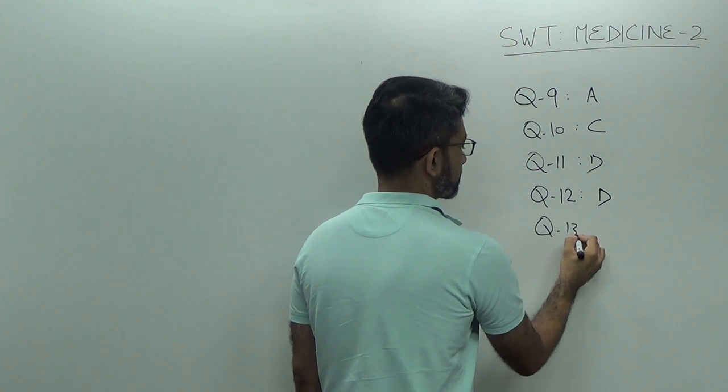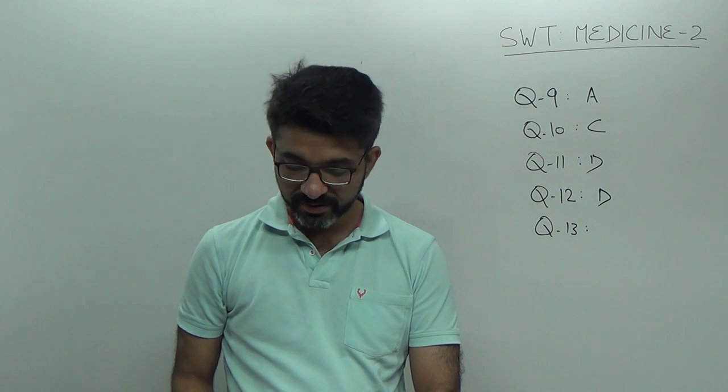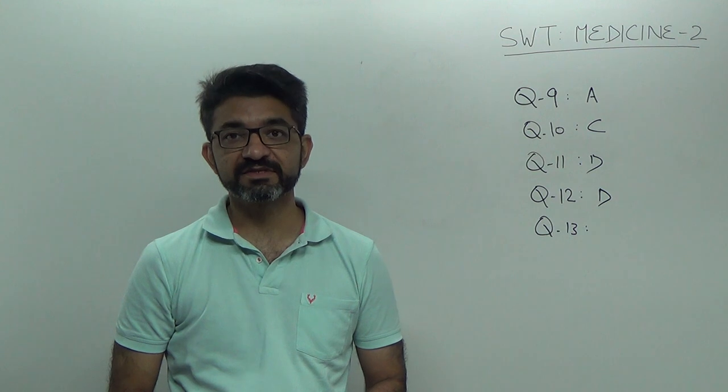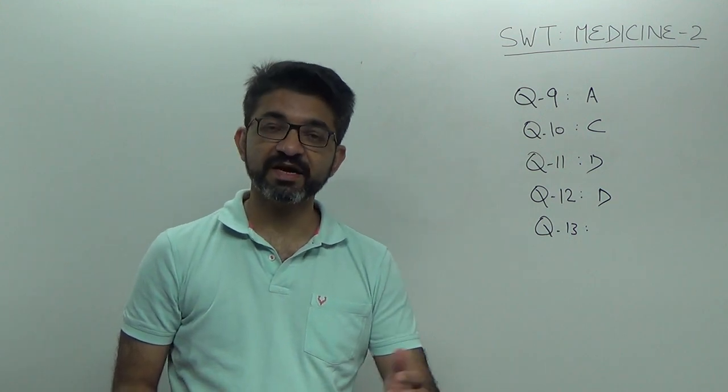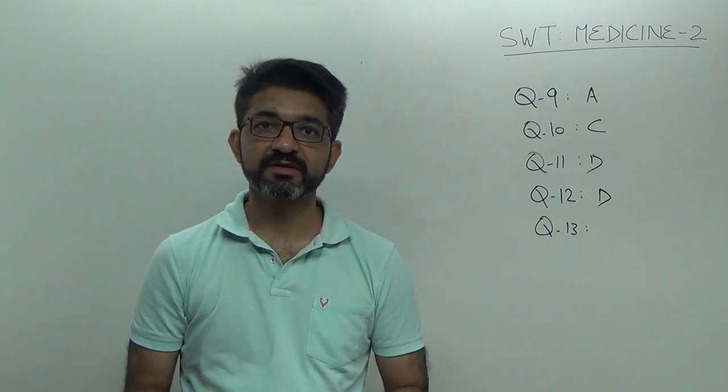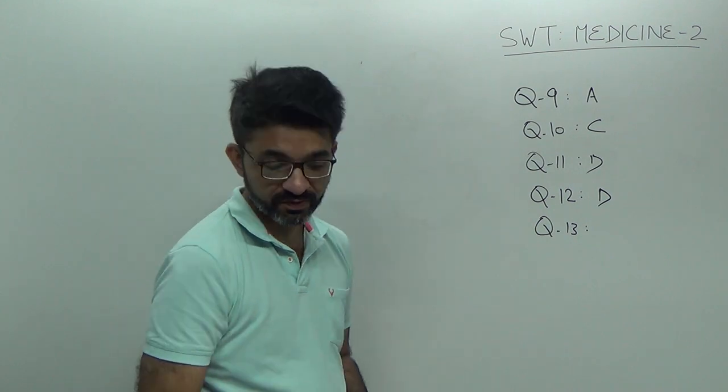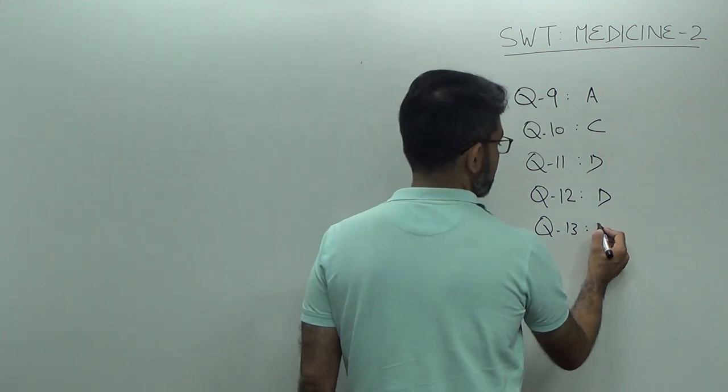Question number 13, pre-tibial myxedema. Pre-tibial myxedema, it is a type of dermopathy of Graves disease. Right? Graves disease is a type of hyperthyroidism. All hyperthyroidism is not Graves disease, but all Graves disease are hyperthyroid. So, it is a dermopathy of hyperthyroid Graves disease. So, answer is D.